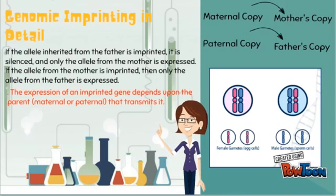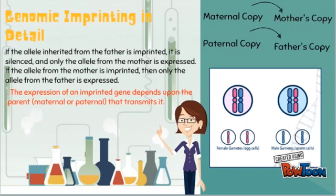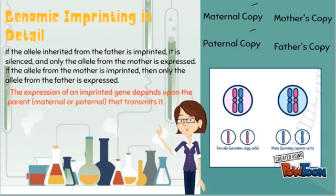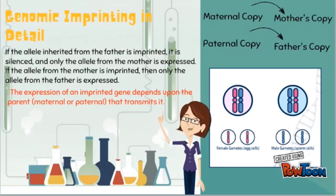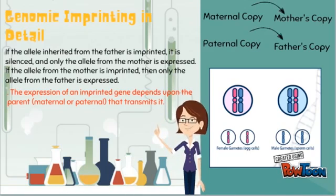To make this concept easier, genomic imprinting is divided into two parts: maternally imprinted genes and paternally imprinted genes. Maternally imprinted genes are generally expressed only when inherited from the father, because the mother's genes are imprinted or silenced. Paternally imprinted genes are generally expressed only when inherited from the mother, because the father's genes are imprinted or silenced.